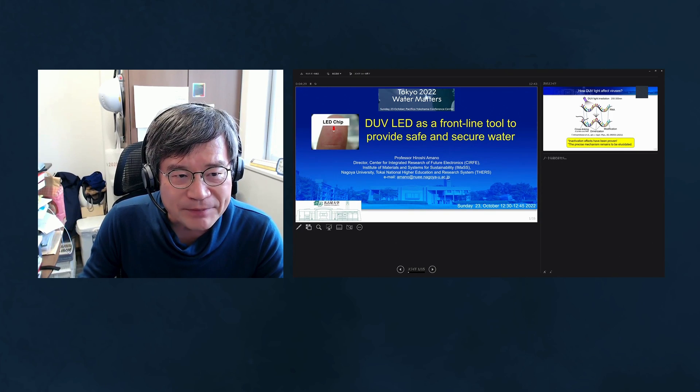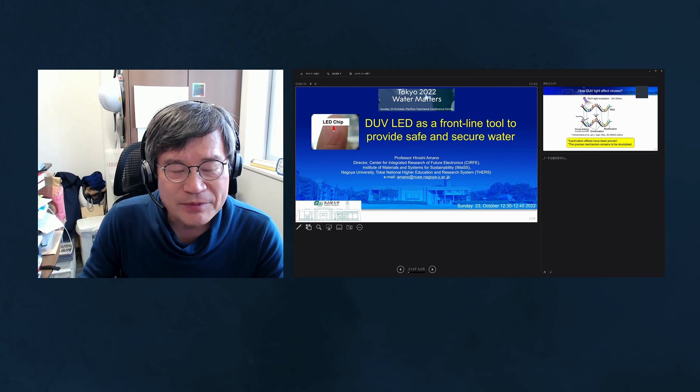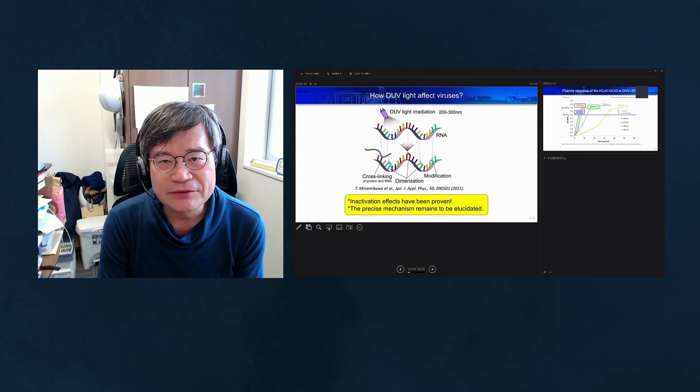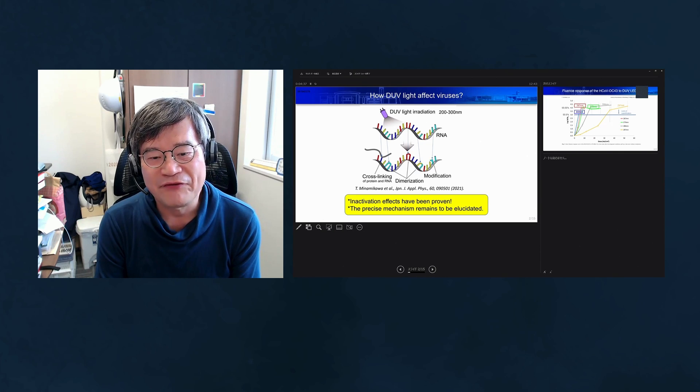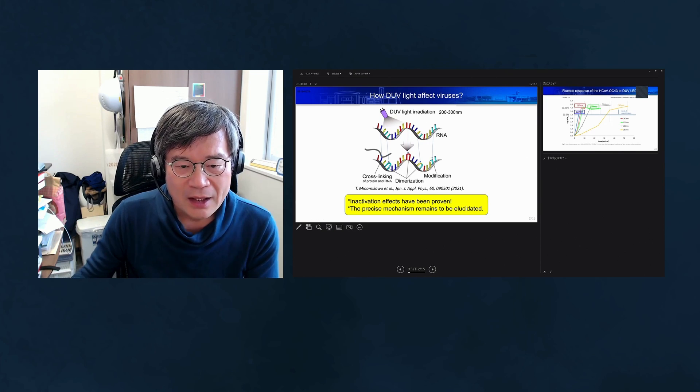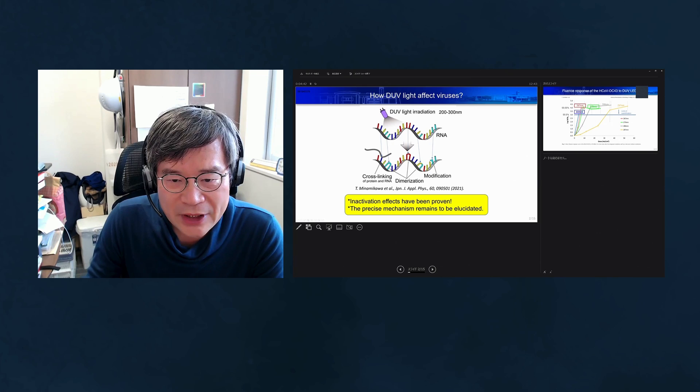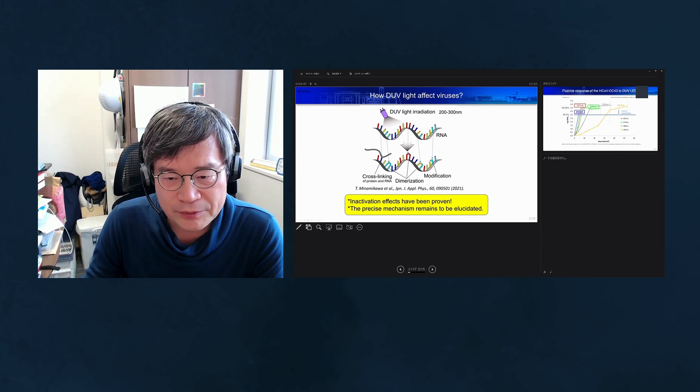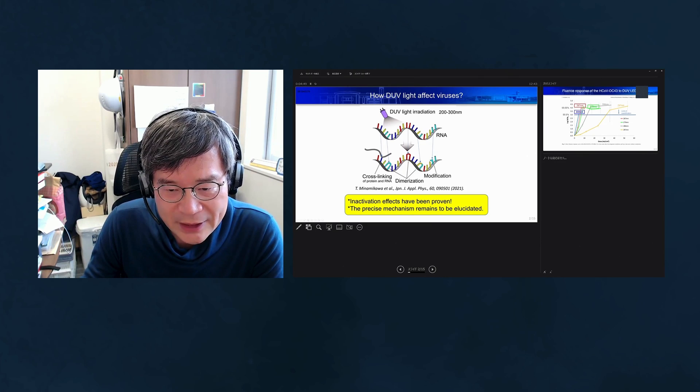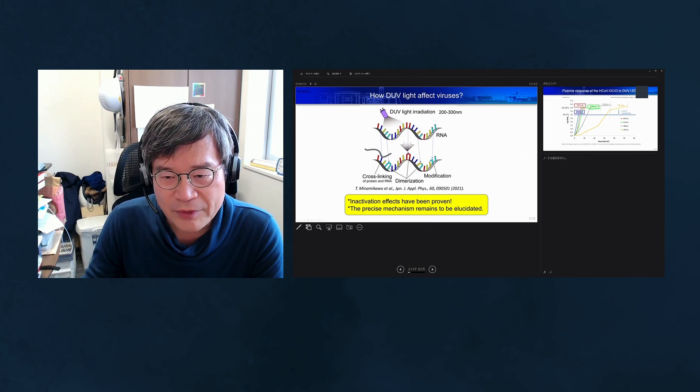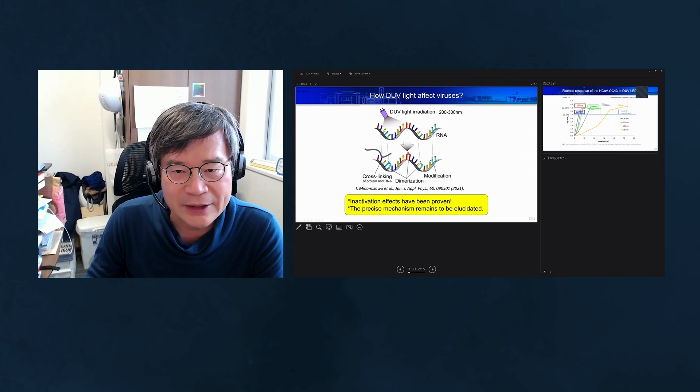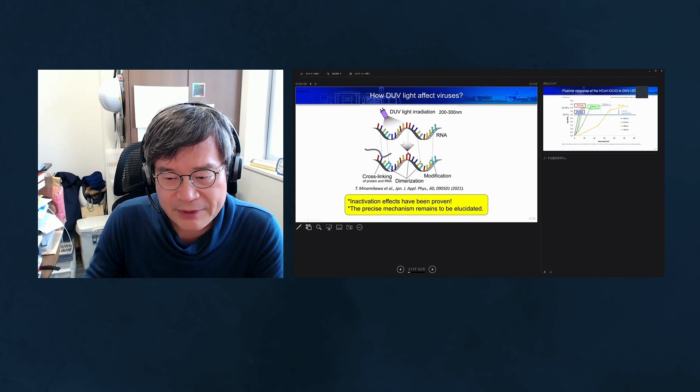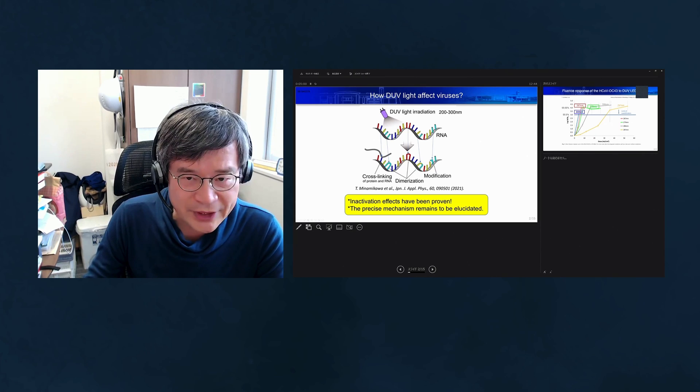The LED chip is very small. Deep ultraviolet light affects viruses through proven inactivation effects like cross-linking, dimerization, or modification of RNA or DNA. However, the precise mechanism remains to be elucidated.